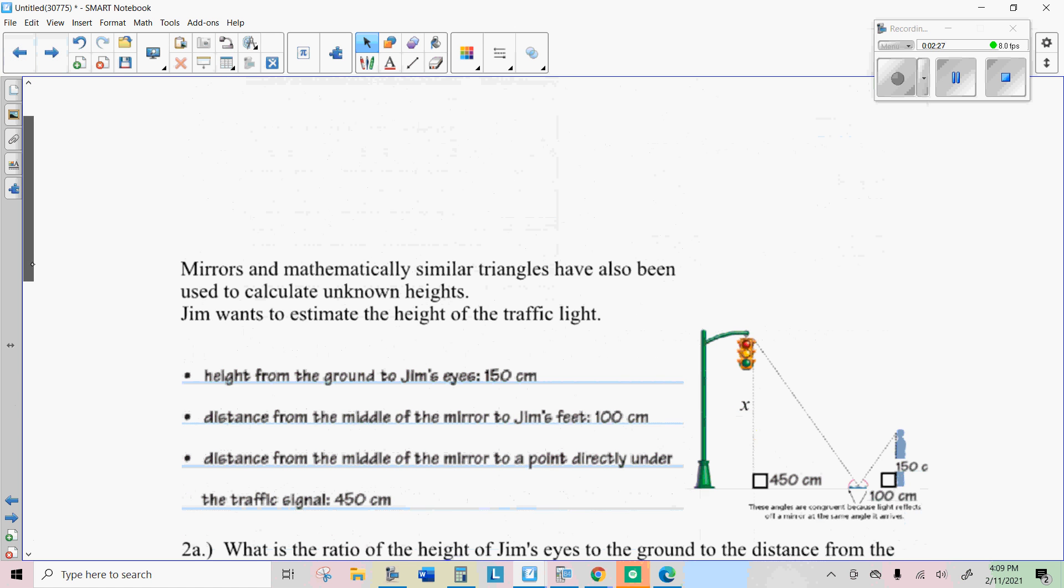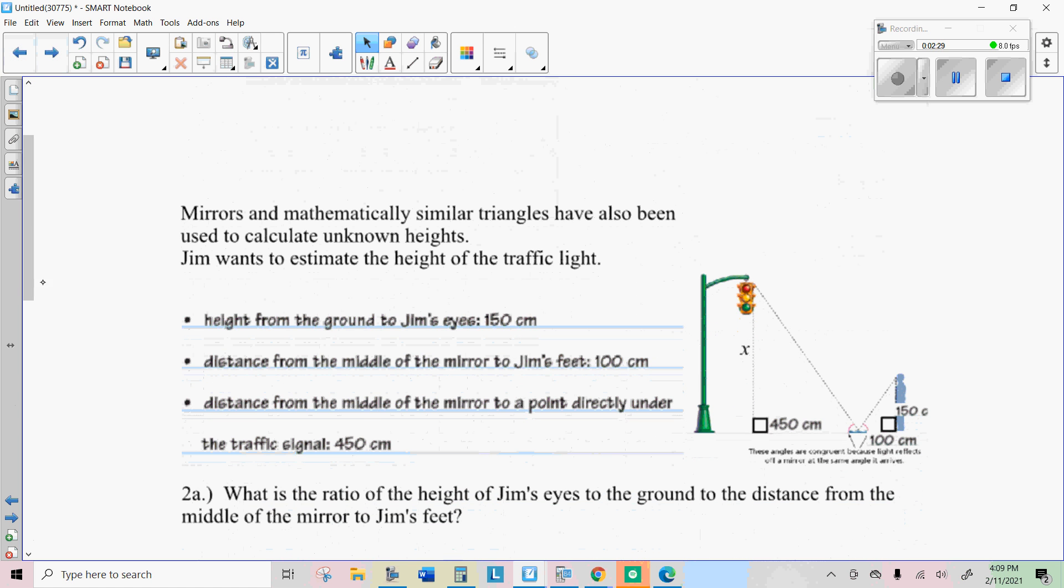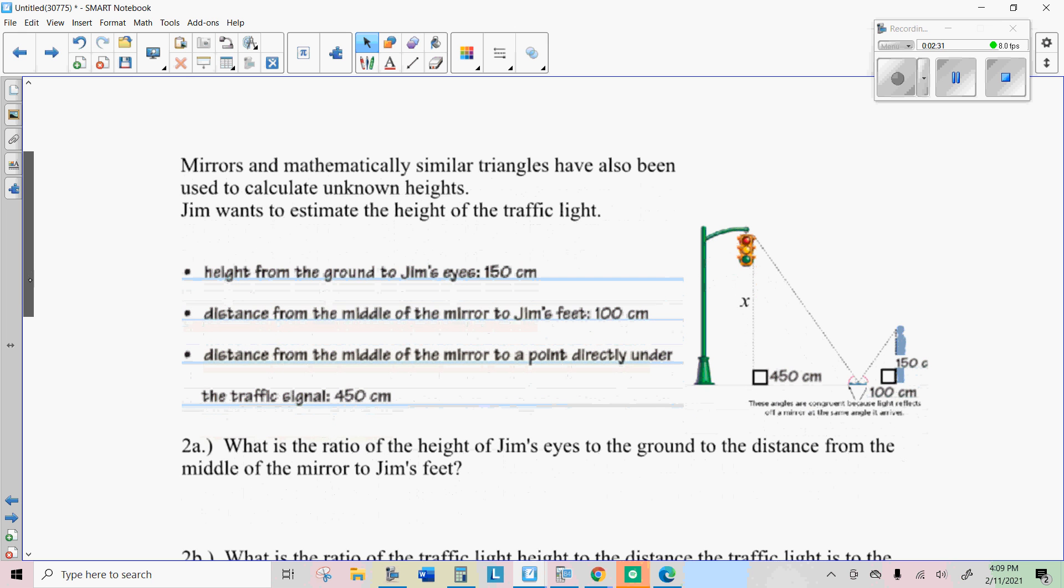Another way you can create similar triangles is by using a mirror. And so if you set up this mirror here and you look into the mirror and you see the object that you're trying to find the height of here, and then you just measure these distances: your height to your eyes, the distance from your feet to the mirror, and the distance from the mirror to wherever the base of whatever you're trying to find the height of is. It needs to be directly under there for this to be a right triangle.